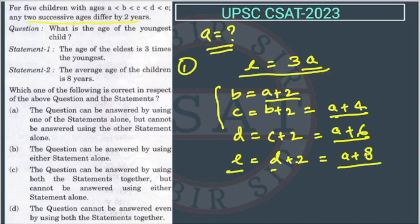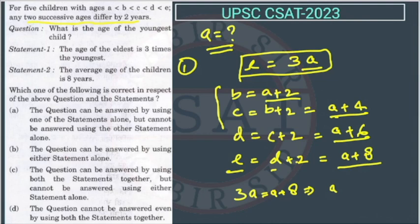The first statement says e is thrice of a. Putting this in, three a equals a plus eight. So three a minus a gives two a equals eight, therefore a equals four. So the age of the youngest child is four. Through the first statement we can deduce this.